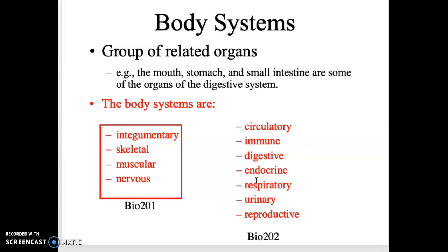In BIO 202 you'll finish the rest of the systems. BIO 201 doesn't cover as many because we need to spend a lot of time with introduction and review, and the nervous system is a huge section all on its own.